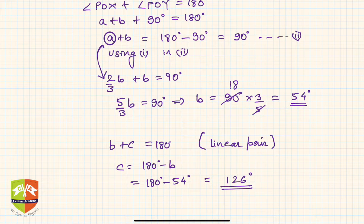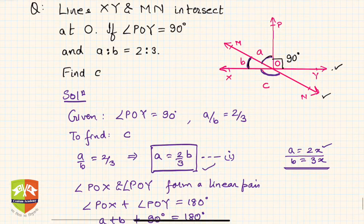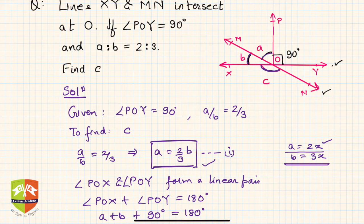So what is the learning from this problem? The moment some information is given—90 degrees and the a to b ratio—and lots of straight lines you could see, you know that in a straight line the total angle is 180 degrees, linear pair. Using that concept and the given information, we could convert the problem into algebraic equations and we solved equations to find the given value that was c in this case.